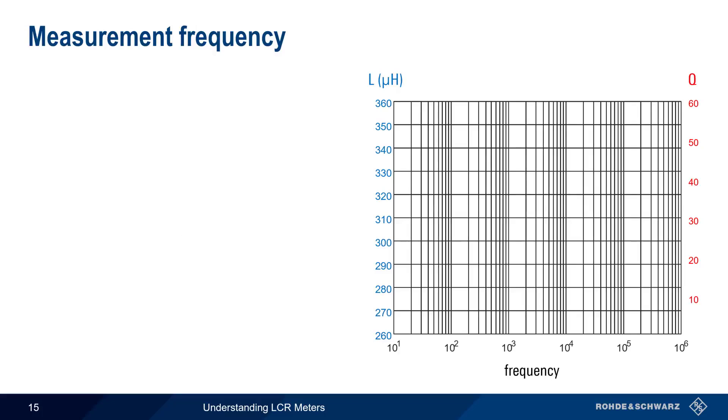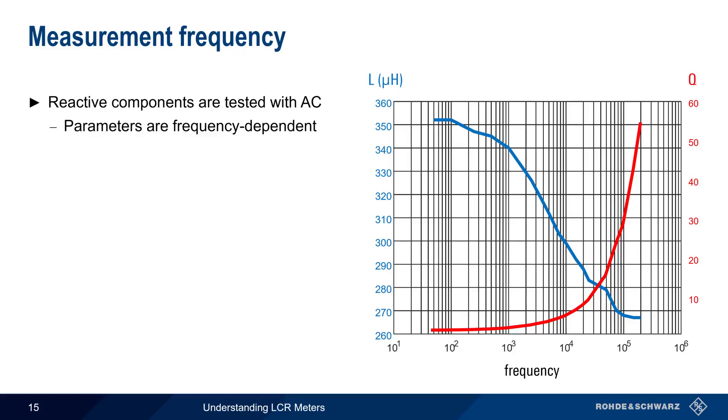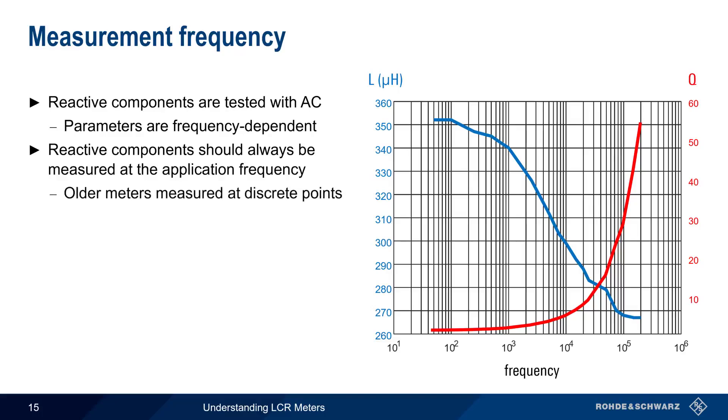Next let's talk about measurement frequency. Recall that reactive components, such as capacitors and inductors, are tested with alternating current, because their parameters, such as reactance and Q, are frequency dependent. In most cases, reactive components should be measured at the frequency of intended application, or across the expected application frequency range. Older or traditional LCR meters often only measured at discrete frequency points, but newer meters are able to measure by sweeping across the defined frequency range. And although resistors are normally tested with DC, note that even these pure resistances may contain some reactants when tested using AC at different frequencies.